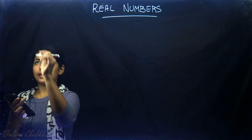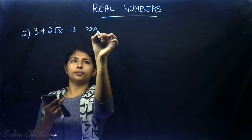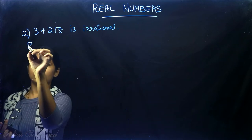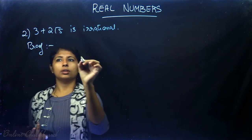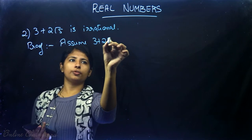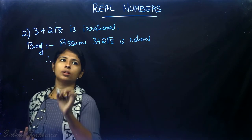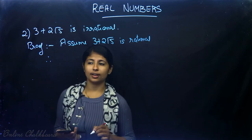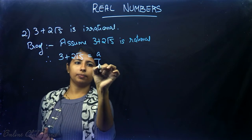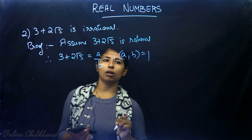Now let's move on to question number 2: prove that 3 + 2√5 is irrational. Here also we'll use the same proof by contradiction. Assume 3 + 2√5 is rational. Therefore there exist a and b such that 3 + 2√5 = a/b, where b ≠ 0 and HCF(a,b) = 1.